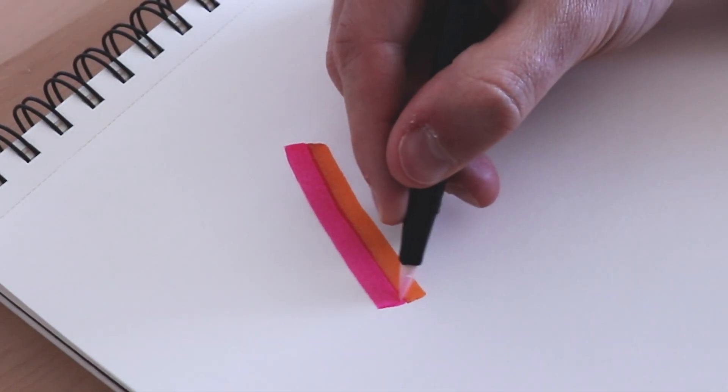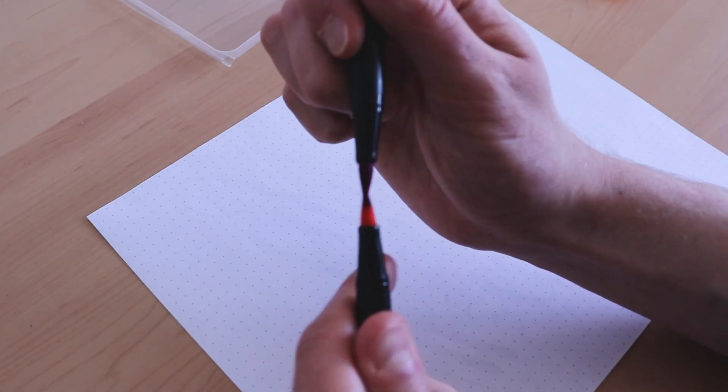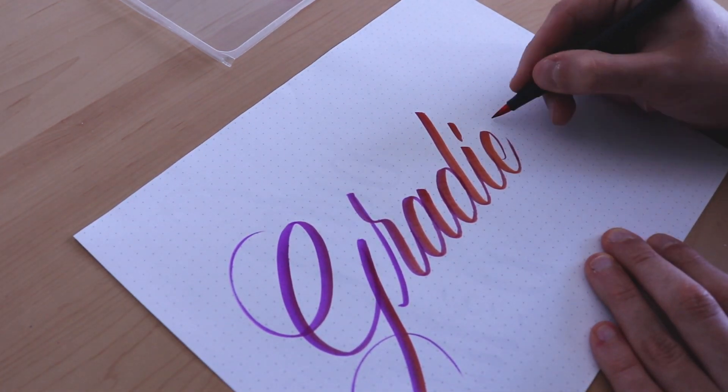On top of that the Tombow Dual Brush Pen features a water-based ink that is fully blendable with other colors. With this you can create some really cool gradients and other colorful artwork.